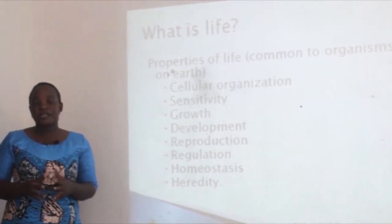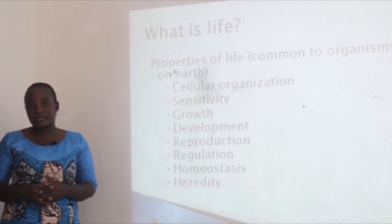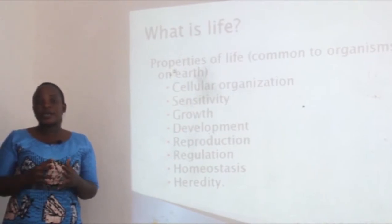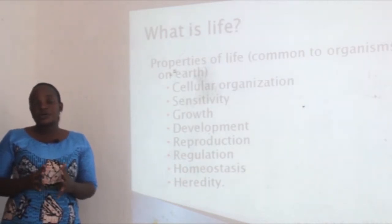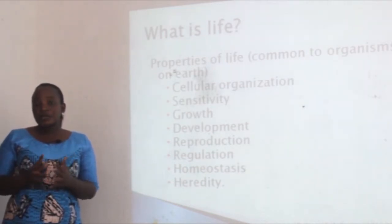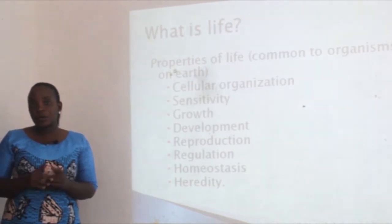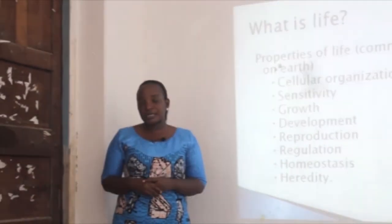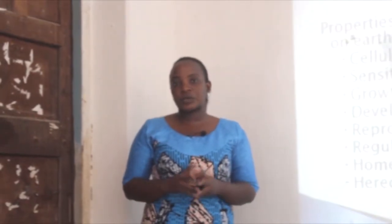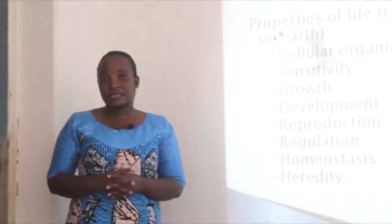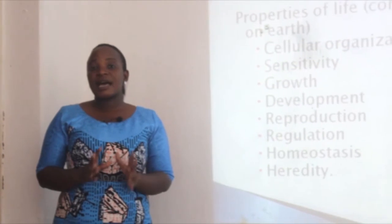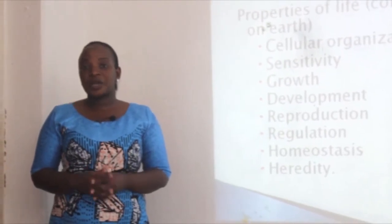Cell organization refers to the components of the cell, also called cell organs. There are two types of cells. One is prokaryotic cells — all bacteria have prokaryotic cells, so bacteria are also called prokaryotes. Another type is eukaryotic cells — organisms other than bacteria are eukaryotes.